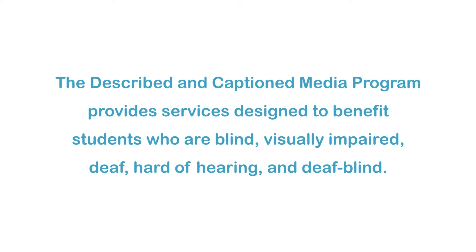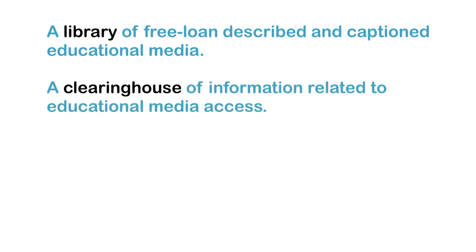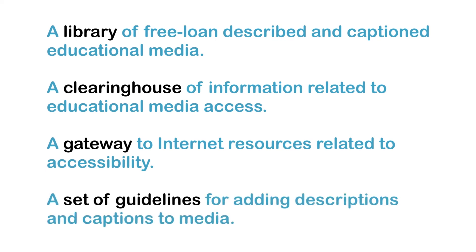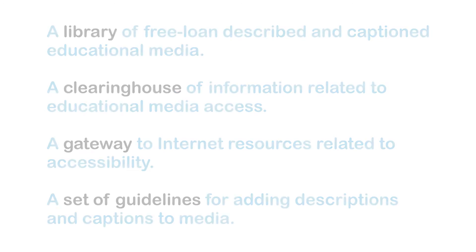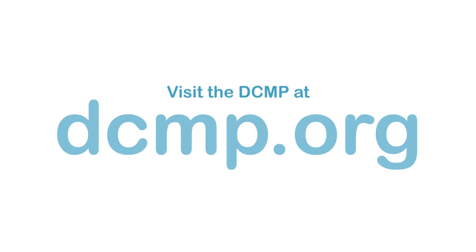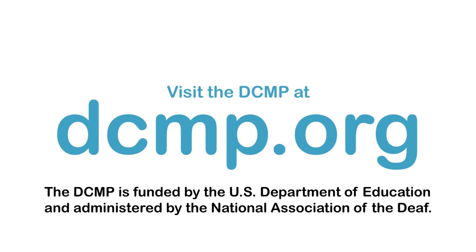The Described and Captioned Media Program provides services designed to benefit students who are blind, visually impaired, deaf, hard-of-hearing, and deaf-blind. These services include a library of free loan described and captioned educational media, a clearinghouse of information related to educational media access, a gateway to Internet resources related to accessibility, and a set of guidelines for adding descriptions and captions to media. There are no user registration or service fees. Visit the DCMP at dcmp.org. The DCMP is funded by the U.S. Department of Education and administered by the National Association of the Deaf.